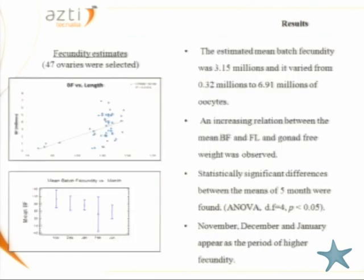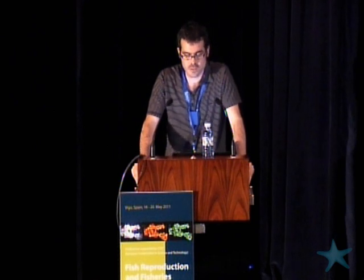Finally, we estimated fecundity using 47 selected ovaries. Mean batch fecundity increased with fish size, and we estimated the mean batch fecundity at 3.15 million oocytes. To identify possible seasonality, we analyzed batch fecundity values by month and found statistically significant differences between months. November, December, and January were identified as the months with the highest mean batch fecundity.